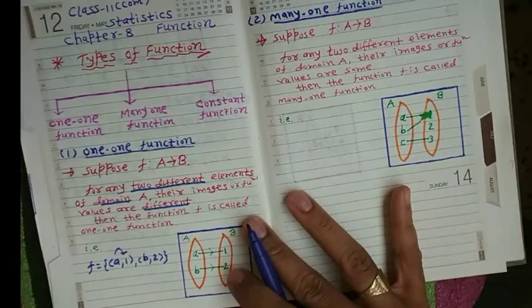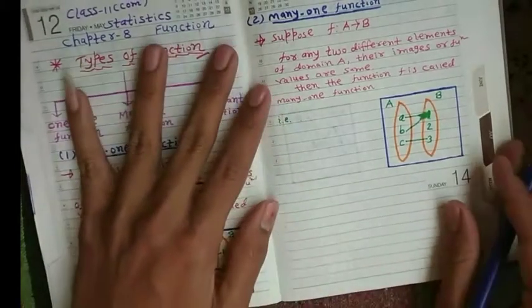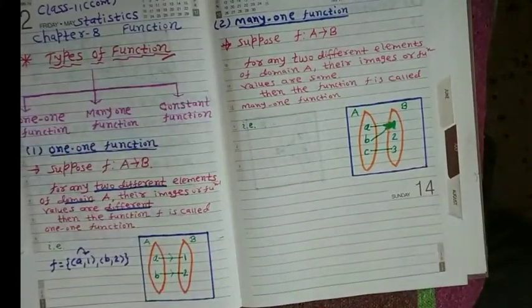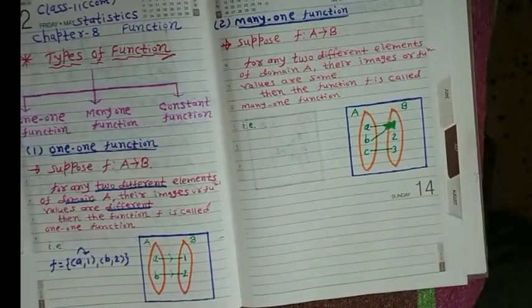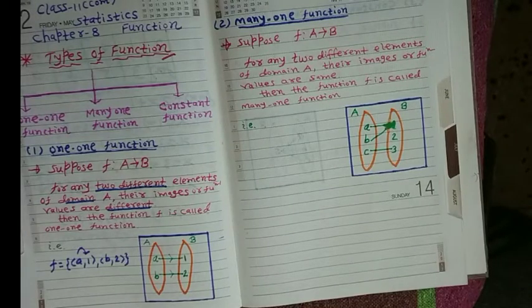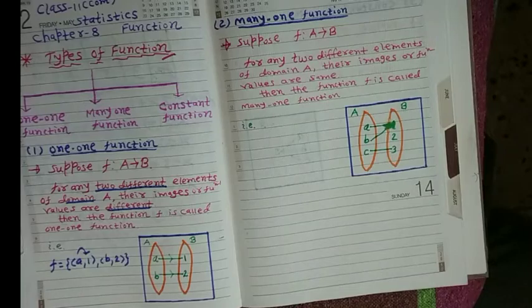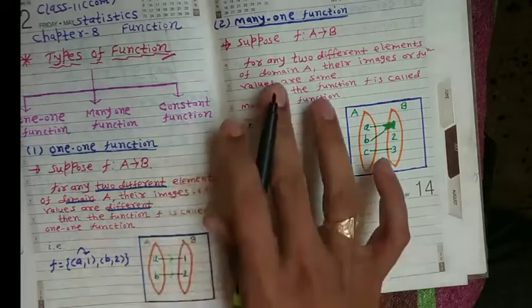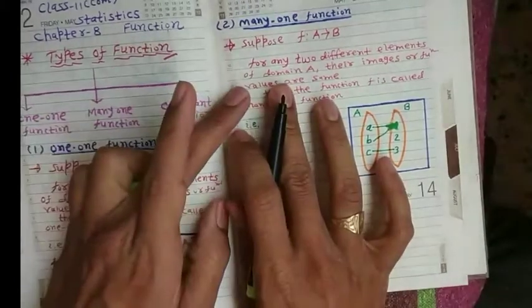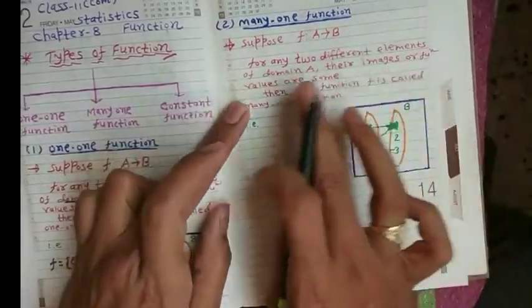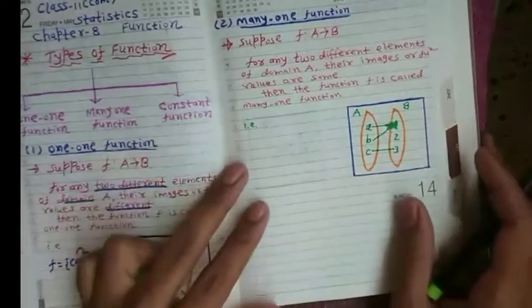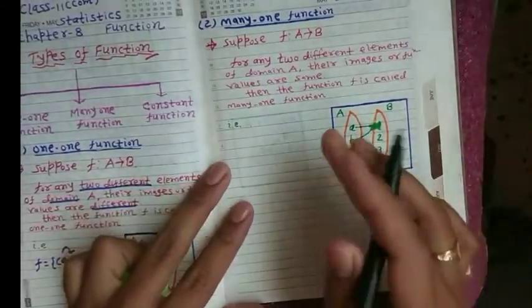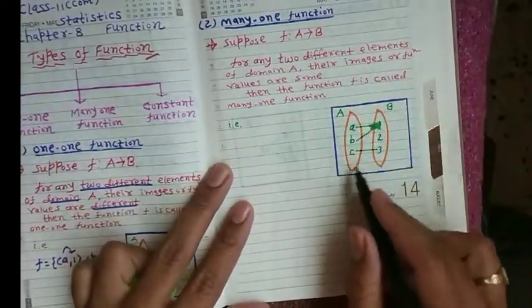Now, second: many-one function. Suppose f is a function from A to B. For any two different elements of domain A, their images or functional values are the same. Let's discuss this by taking one example.